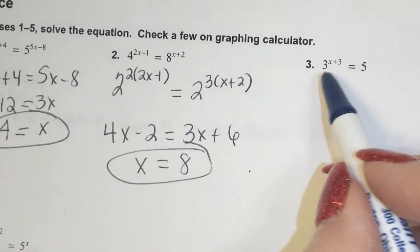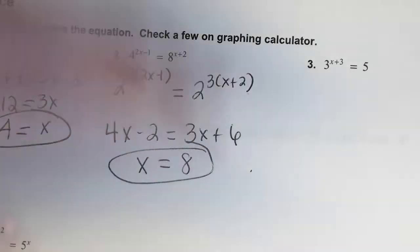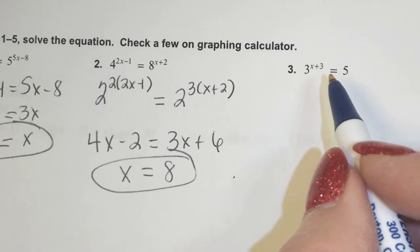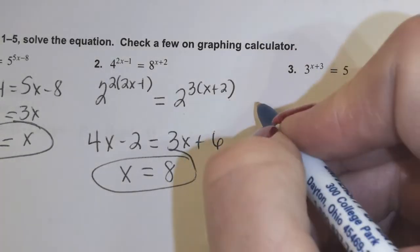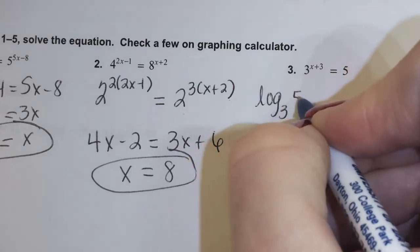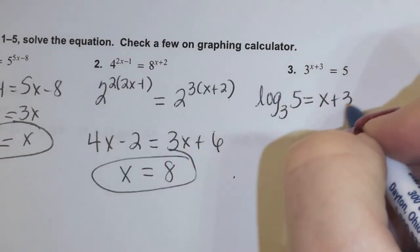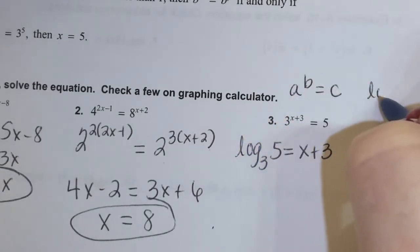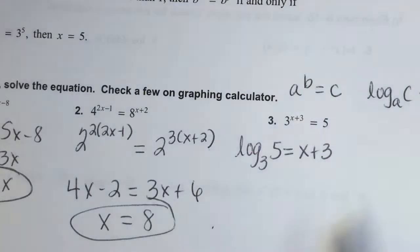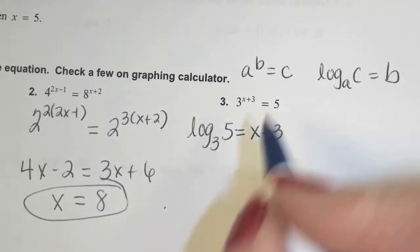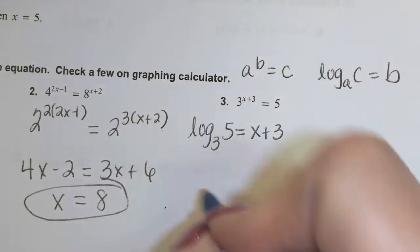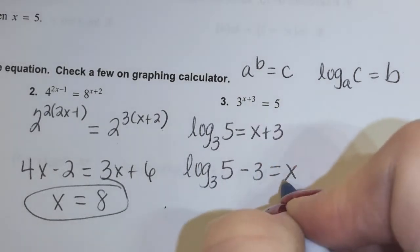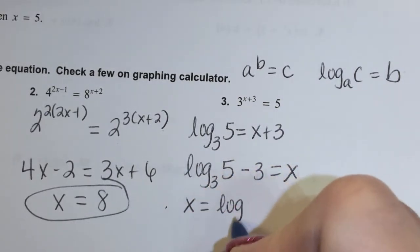Number 3: it's impossible for us to get like bases, so on a problem like this I have to rewrite it in logarithmic form. I would have log base 3 of 5 equals x plus 3. Remember: if we have a to the b equals c, that's the same as log base a of c equals b. To solve the problem I just subtract 3, so the answer is log base 3 of 5 minus 3 equals x. That's the exact answer.